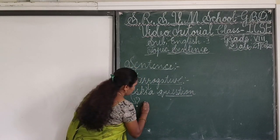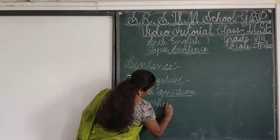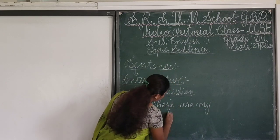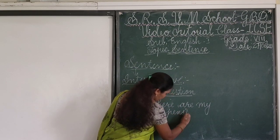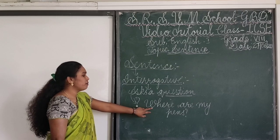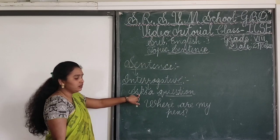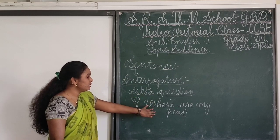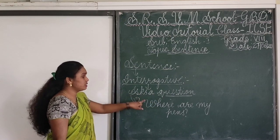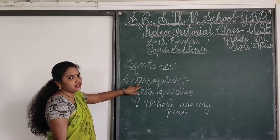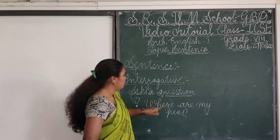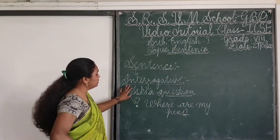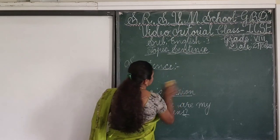For an example: 'Where are my pens?' Where are my pens is a question asked by the speaker to the listener. So, 'Where are my pens?' comes under the interrogative sentence because it's a question, and we always end it with a question mark. So, it's an interrogative sentence.